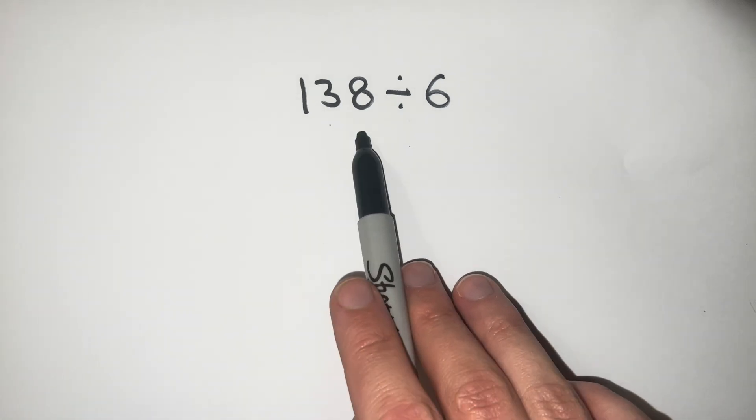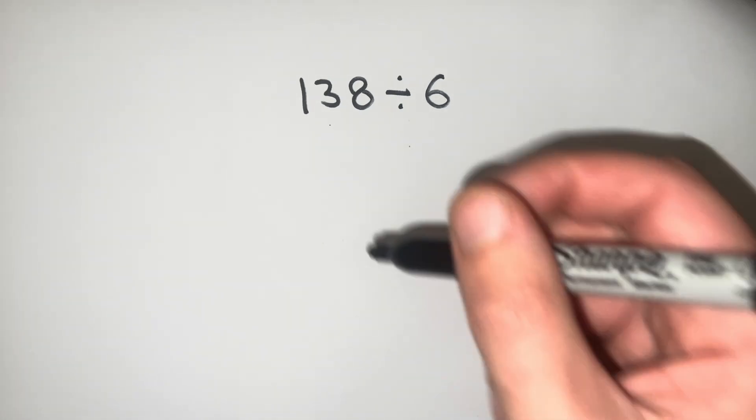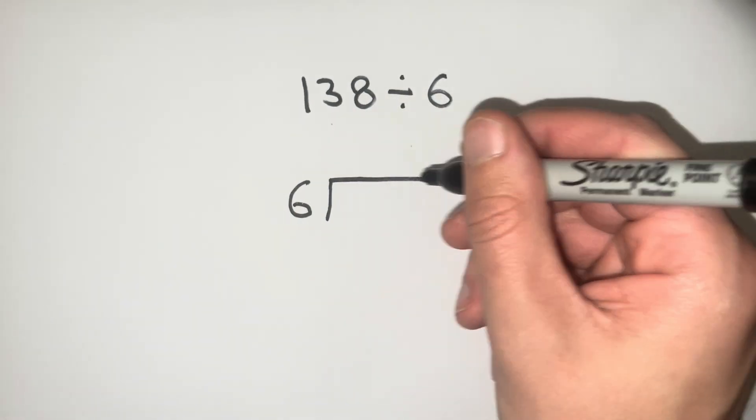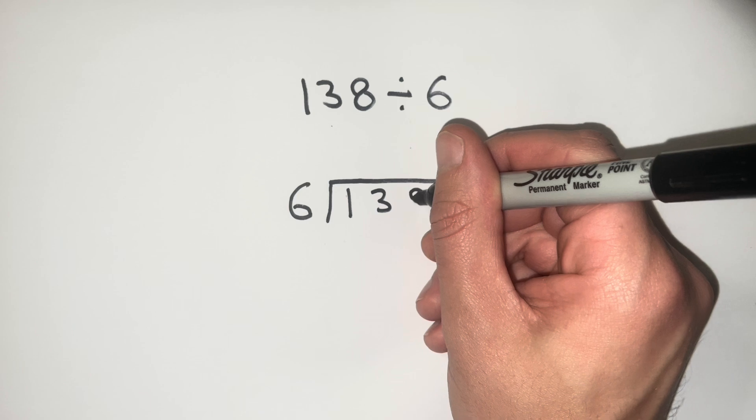So for example to do 138 divided by 6, we would take the 6 on the outside of our bus stop, draw our bus stop in and put 138 inside our bus stop.